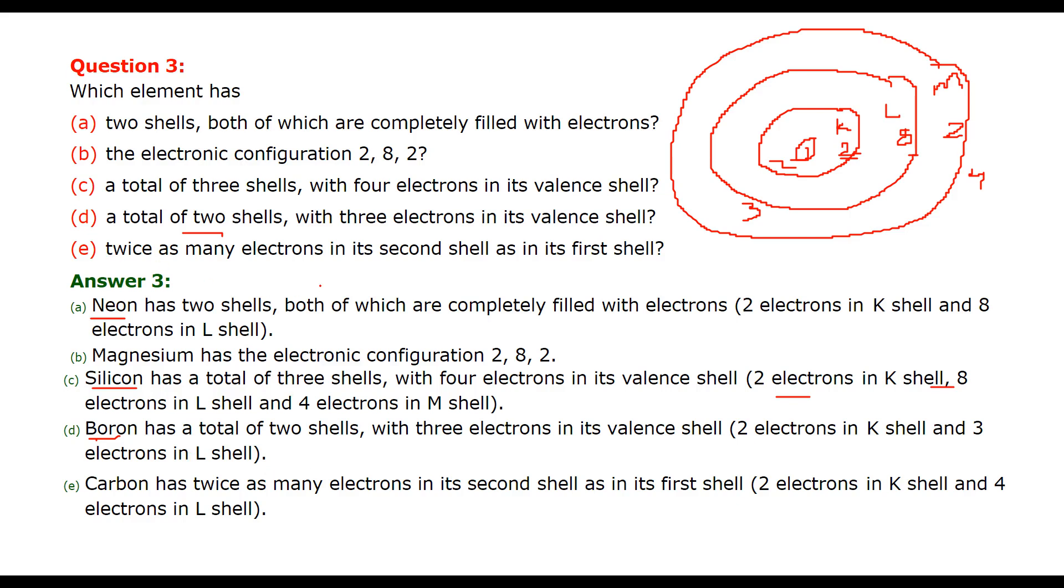Twice as many electrons in its second shell as in its first shell. Twice. So if it is 2, because at most the K shell can hold 2, here this is double of 2. So 2 into 2 is 4. So 2 plus 4 is 6, which is actually carbon.